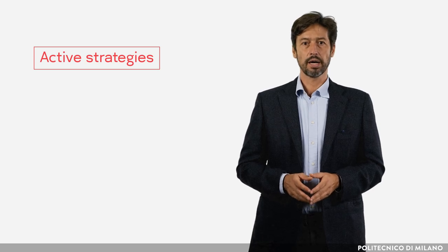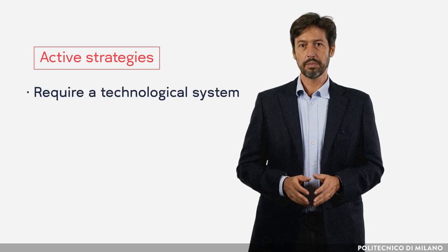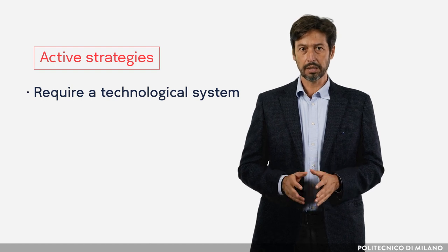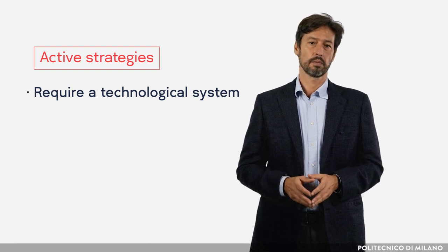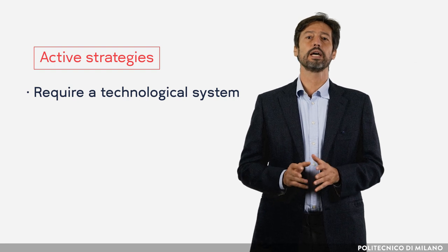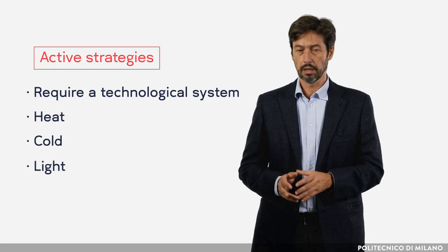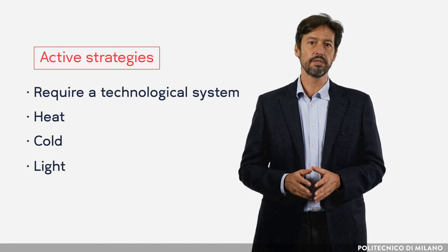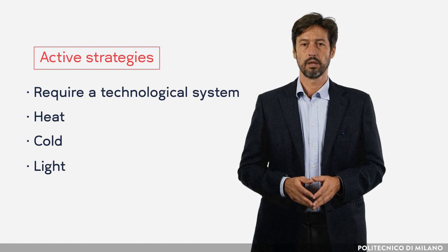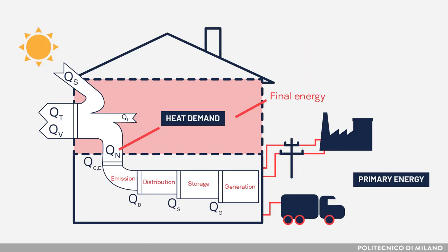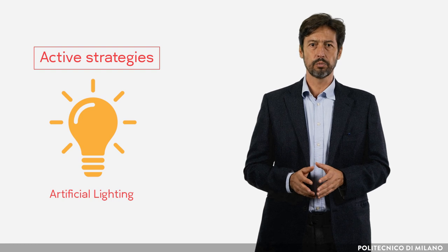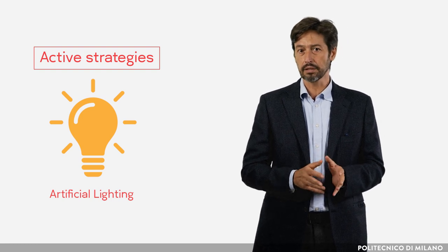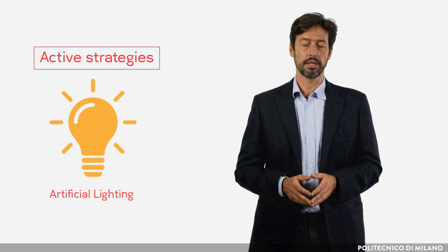Active strategies require a technological system which can be activated by the user or automatically by a control system. It converts primary energy into heat, cold, or light to support the passive behaviour of the building and achieve the task of comfort. For example, an active heating system will provide heat to counterbalance heat dispersions, or an artificial light system will provide additional light flux to integrate the scarceness of natural lighting.